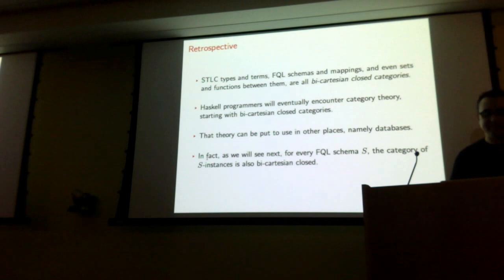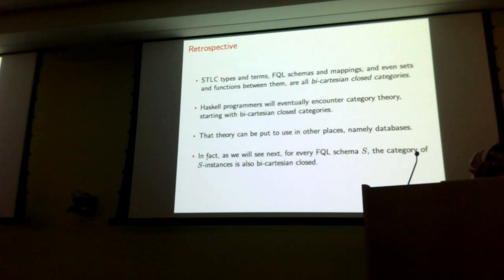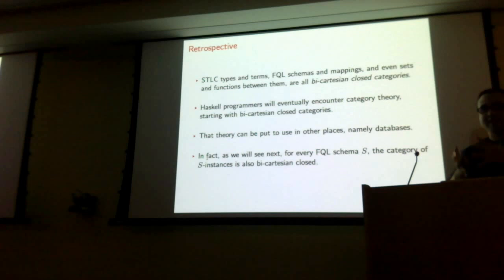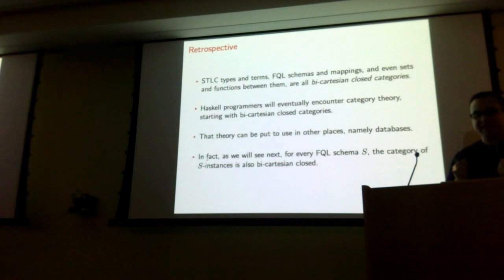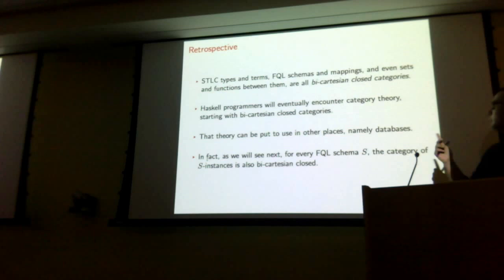For my last trick, I'm going to show that not only do FQL schemas and mappings form models of the simply typed lambda calculus, but further: if you fix any database schema S, the instances on that schema are themselves a model of the simply typed lambda calculus. This essentially means that the language FQL we've developed contains two copies of the simply typed lambda calculus inside it. These bicartesian closed categories come up pretty much everywhere.